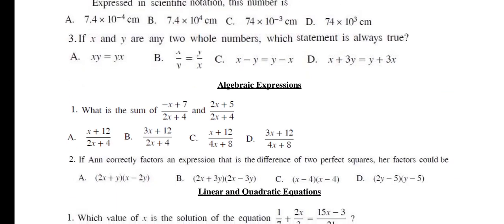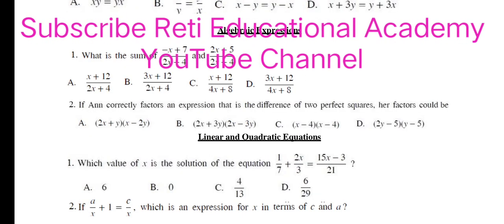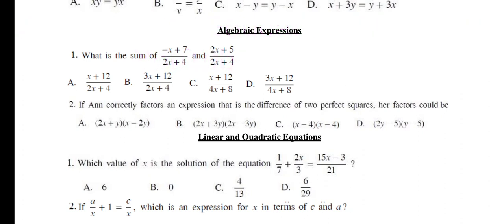Question from algebraic expressions. Number 1: What is the sum of minus X plus 7 upon 2X plus 4 and 2X plus 5 upon 2X plus 4? The right option is A. Question number 2: If Ann correctly factors an expression that is difference of two perfect squares, her factor could be B, and the right option is B. Inshallah I will share the solution of these questions soon.